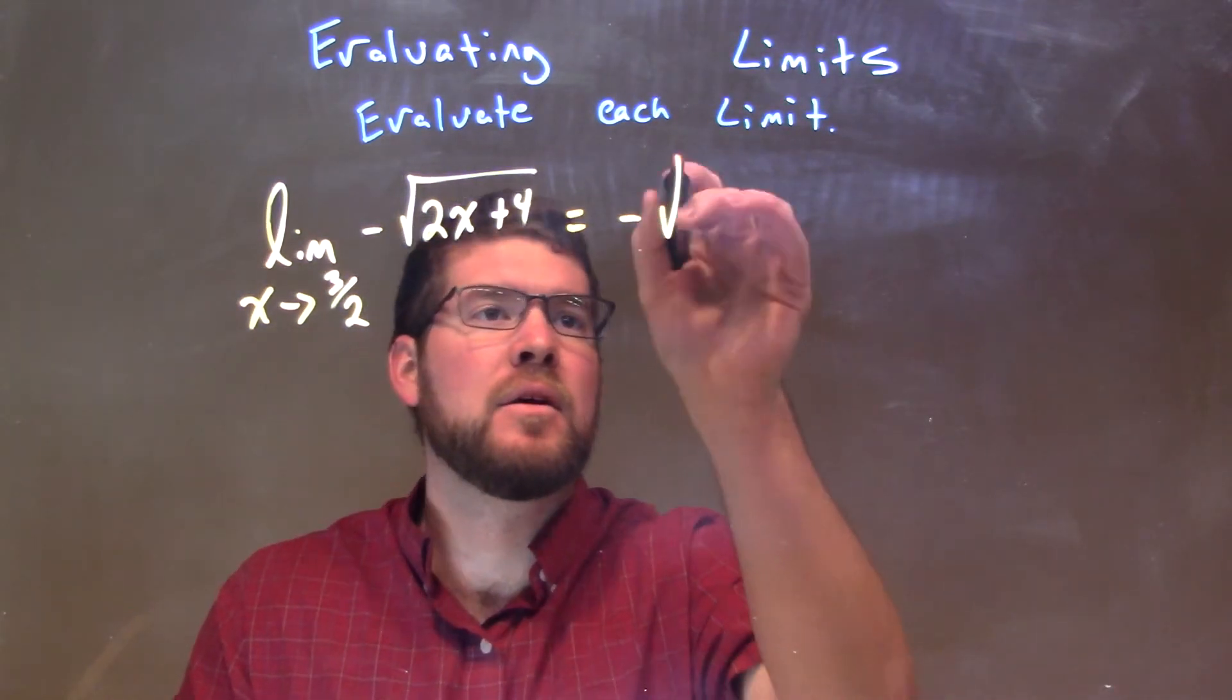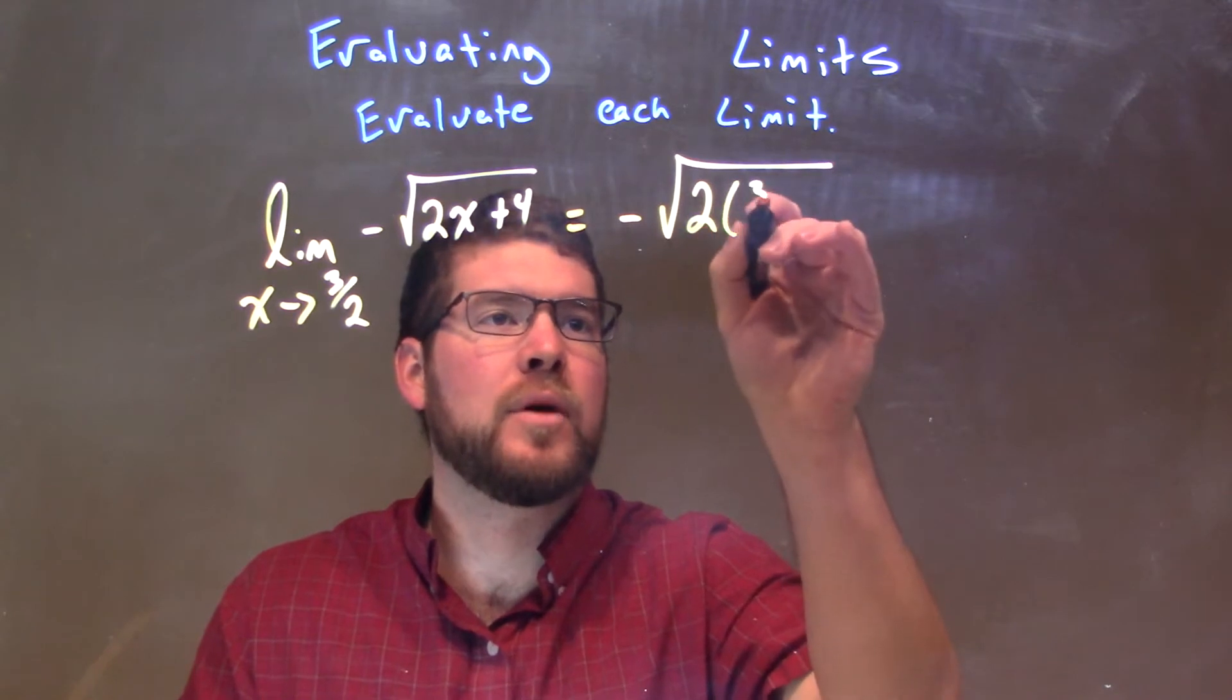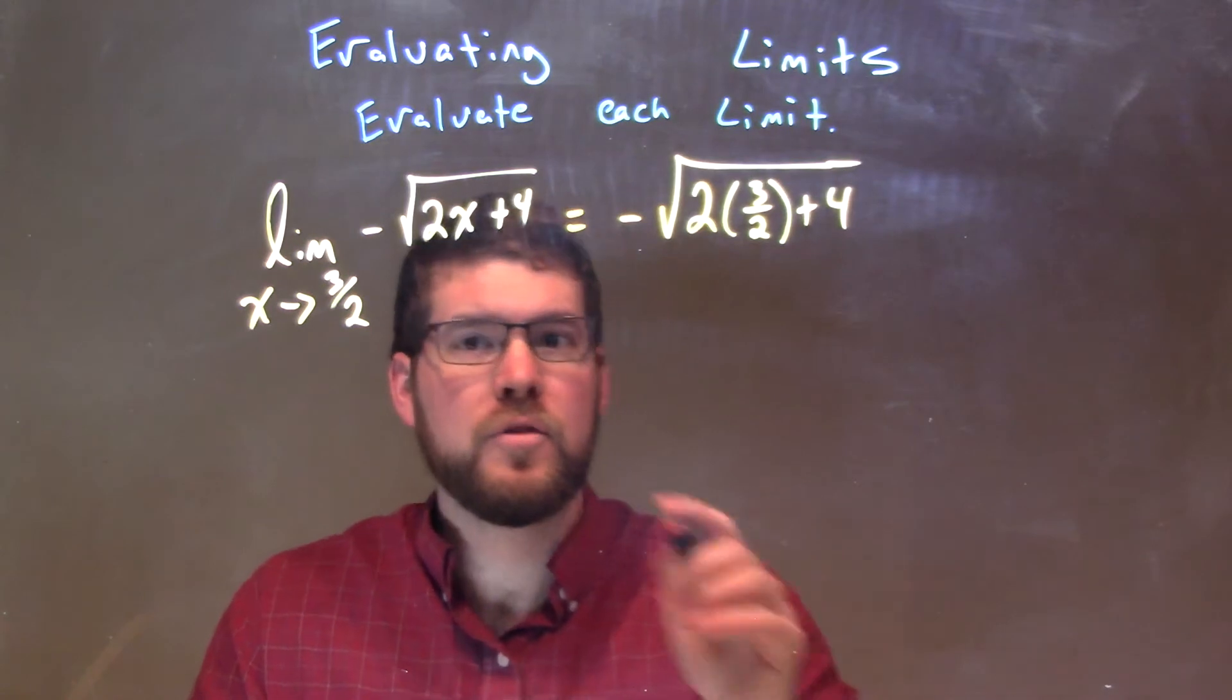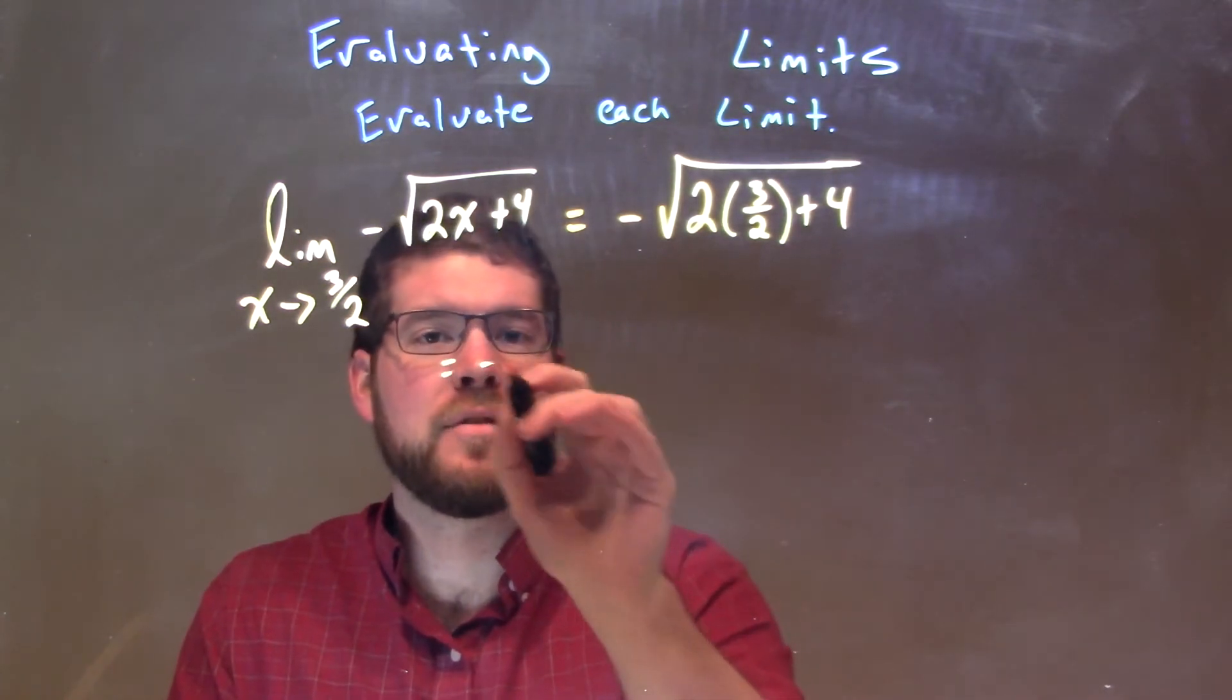So, we have a negative on the outside, square root of 2 times 3/2, plus 4. Let's just simplify this a little bit. The negative stays on the outside here.